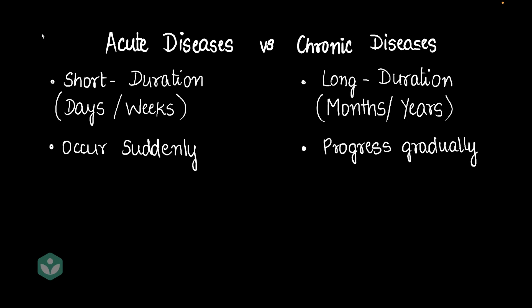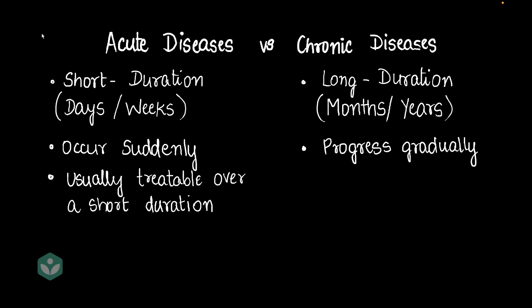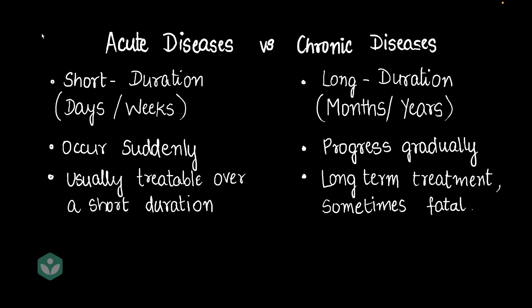Let me give you one more point of difference. Acute diseases are usually treatable over a short duration, whereas chronic diseases require a long-term treatment plan and it takes years of treatment. And sometimes it's hard to treat and it even ends up being fatal.